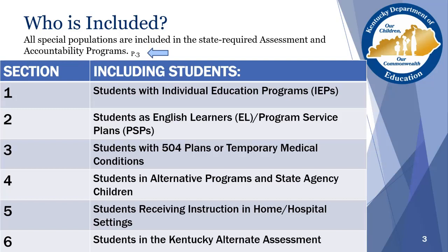There are six sections covered in this regulation. Every section represents a different student group and the services they are eligible to receive under specific conditions. The sections include students with IEPs, students who speak English as a second language who may have a specific access to a program service plan and some may also require an IEP, students who have a 504 plan or where a medical emergency occurs and an accommodation is necessary, students in an alternative or state agency setting, students who receive instruction in home hospital settings, and students who participate in the Kentucky Alternate Assessment.